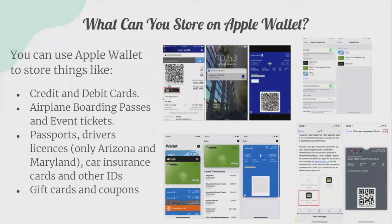Things you can store in Apple Wallet include your credit and debit cards, airplane boarding passes, event tickets, your passport and driver's license — currently only in Arizona and Maryland — as well as car insurance cards, other IDs, gift cards, and coupons.